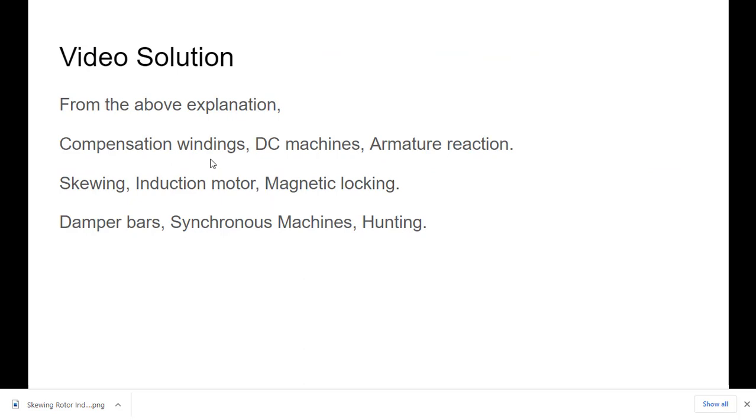From the above explanation, compensating windings are used in DC machines and are used to reduce the cross magnetization effect of the armature. And the skewing of the rotor bars is placed in induction motor and it helps to reduce the magnetic locking. And damper bars are placed in synchronous machine and it helps in hunting to attain the synchronous speed.